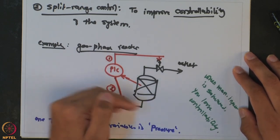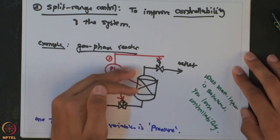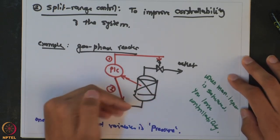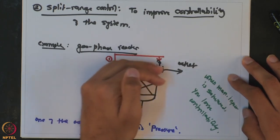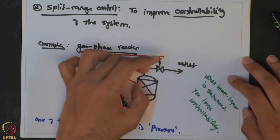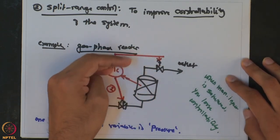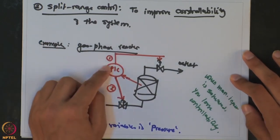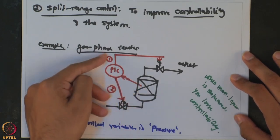As the amount of reactant going into the reactor decreases, the rate of reaction goes down, vapor generation goes down, and eventually we close down the feed entirely. The material already inside will find an exit path through the outlet, and eventually the pressure buildup will be restricted to a satisfactory limit. So here, to control a single controlled variable — pressure — we are using two manipulated inputs.